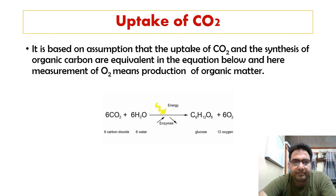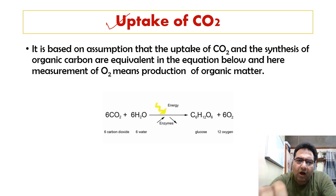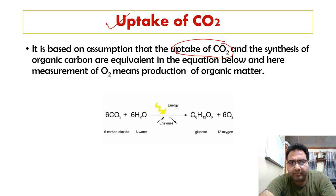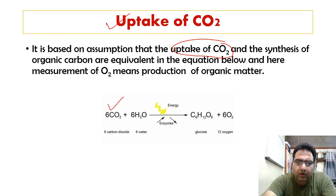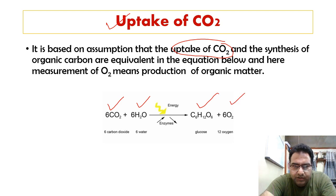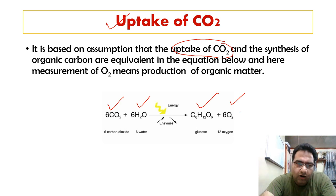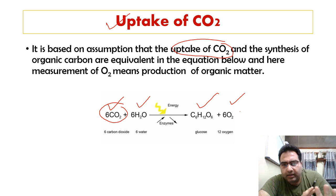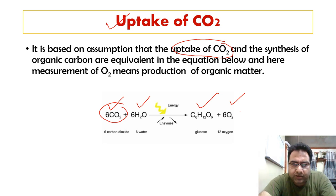The next method is uptake of carbon dioxide. We know the equation: 6 molecules of CO2 and 6 molecules of water give carbohydrate and oxygen. How much oxygen is released and carbon dioxide is taken up can be measured. The measurement of oxygen or CO2 in the equation represents the production of organic matter.